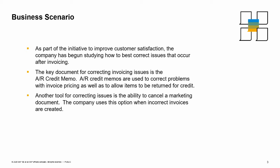As part of the initiative to improve customer satisfaction, the company has begun studying how to best correct issues that occur after invoicing. The key document for correcting invoicing issues is the AR Credit Memo. AR Credit Memos are used to correct problems with invoice pricing as well as to allow items to be returned for credit. Another tool for correcting issues is the ability to cancel a marketing document. The company uses this option when incorrect AR invoices are created.